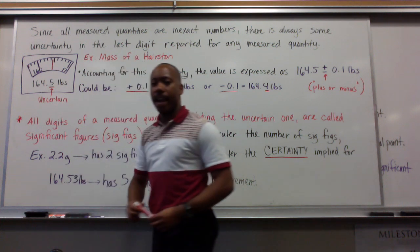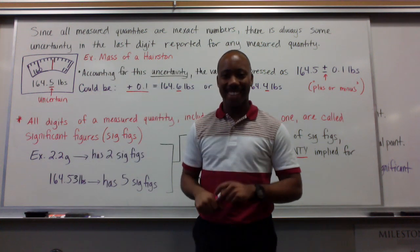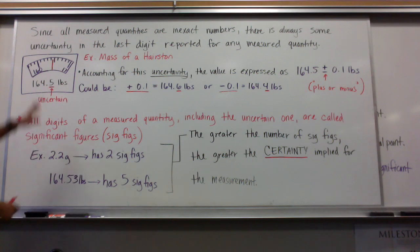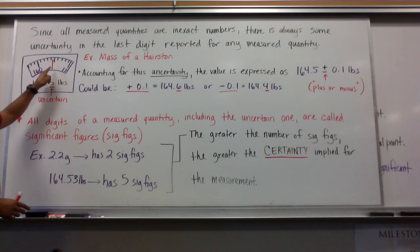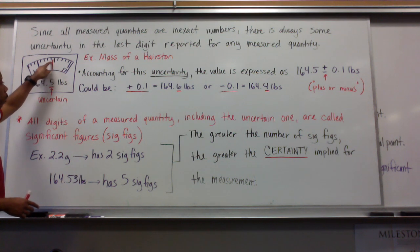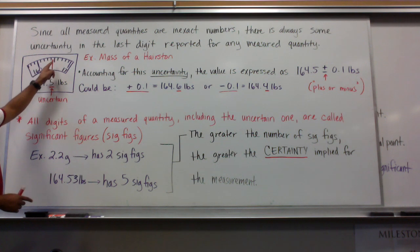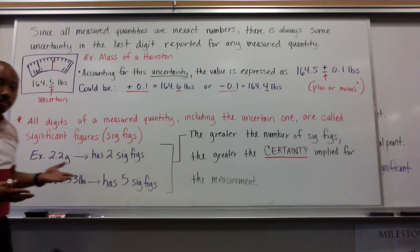For example, let's say we're going to take the mass of a Hairston - me. Now, look at my scale here. If I were to step on the scale here, it would read 160.1, 0.2. Actually, sorry, that's wrong. It would be 161, 162, 163, 164. This red dial here is where the reading is for my weight. So, I'd be 164, and this red needle here is right somewhere in the middle.